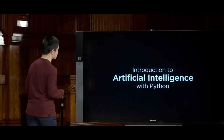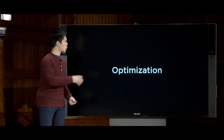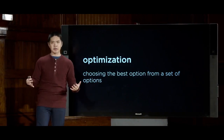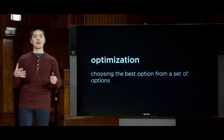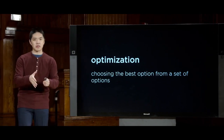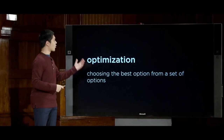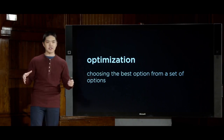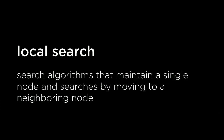Today, we're going to turn our attention to another category of problems generally known as optimization problems, where optimization is really all about choosing the best option from a set of possible options. We've already seen optimization in some contexts, like game-playing. The first algorithm we'll look at is known as local search.